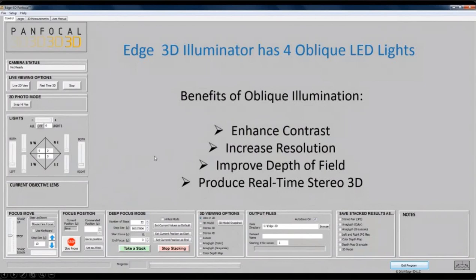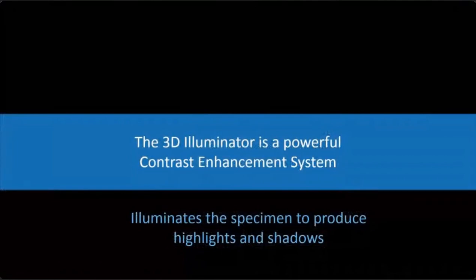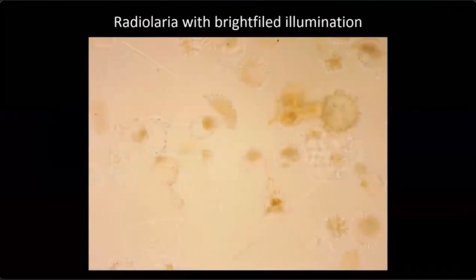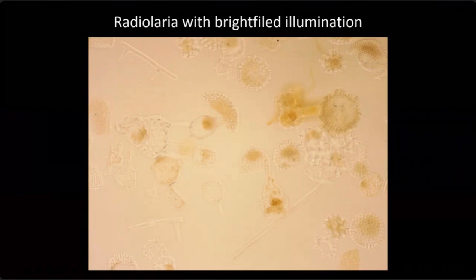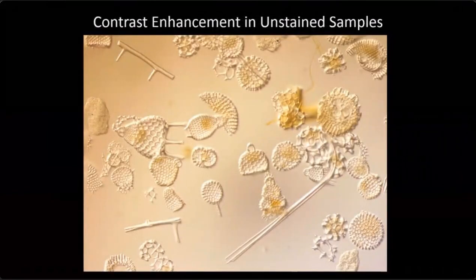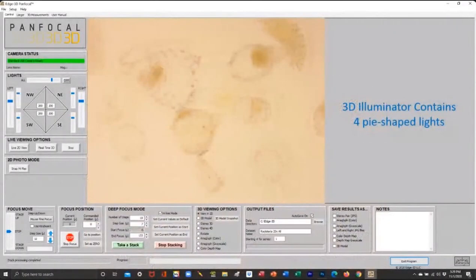This system enhances contrast, increases resolution, improves depth of field, and produces real-time 3D stereo. The illuminator is a powerful contrast enhancement system — it illuminates the specimen to produce highlights and shadows, doing particularly well with unstained specimens. Here is a radial area viewed with bright field, and as soon as you put our illuminator on and look with one oblique light, look at the difference — all of a sudden you can clearly see the structure of all those little microscopic organisms.